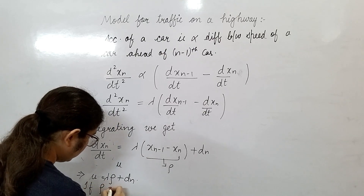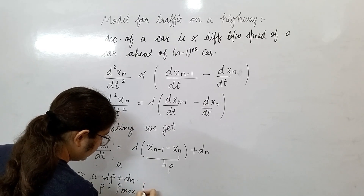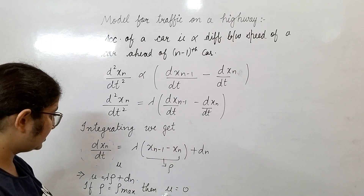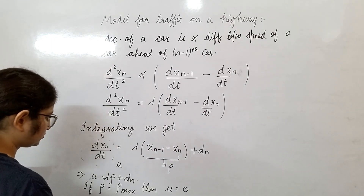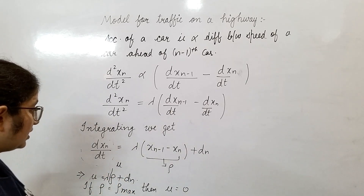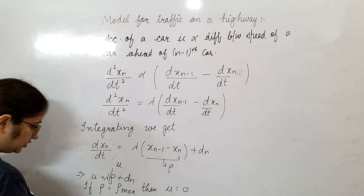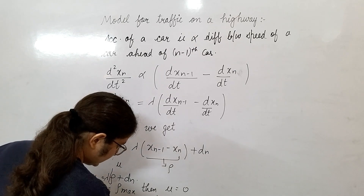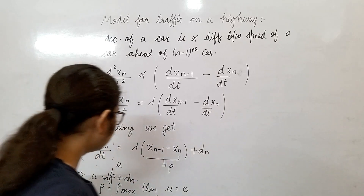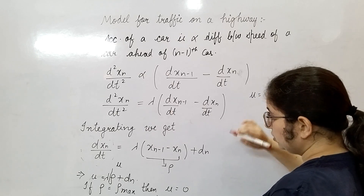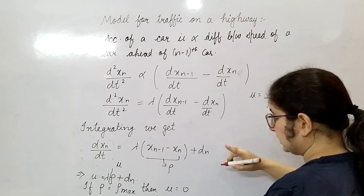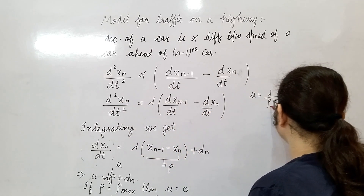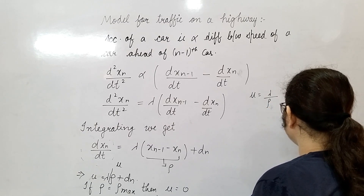If rho, that is traffic density, equals rho maximum, then speed u will be zero. Here lambda is divided by rho — it is lambda over rho, not in product form. If speed is zero, then you have: 0 equals lambda over rho plus d_n. From here the value of d_n is minus lambda over rho maximum. Now putting this value back, you have u equals lambda times (rho over rho_max)... then rho times lambda over rho minus lambda over rho maximum.